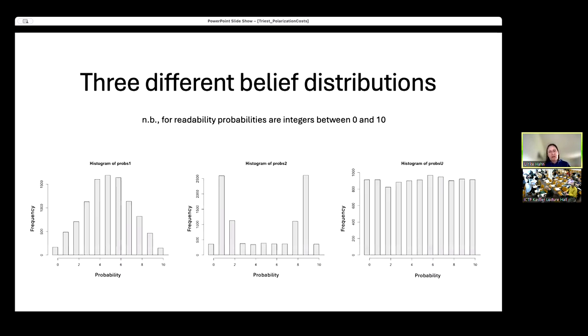So I'm specifically going to look at three different belief distributions. To make these numbers readable, these are histograms of belief distributions in populations of 10,000 simulated agents, and probabilities are numbers between 0 and 10. And there's a normal distribution, a bimodal distribution, not the most extreme one you could imagine but a pretty bimodal one, and a uniform distribution.